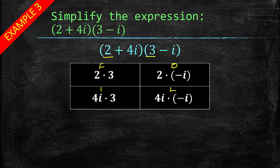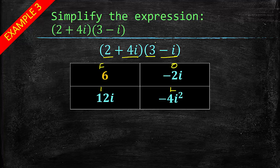Don't forget we have our box. First, outer, inner, last. So we've got our first terms 2 and 3, two times three. We've got our outside terms 2 and negative i. Then we have our inside terms 4i and 3. And then we have our last terms 4i and negative i. So when we multiply 2 times 3 we get 6. When we multiply 2 times negative i we get negative 2i. When we multiply 4i times 3 we get 12i. When we multiply 4i times negative i we get negative 4i squared. This is what I said you need to be careful of.